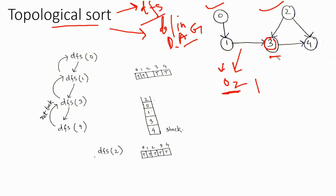Vertex 3 is dependent on job 1 and job 2. Since job 1 and job 2 are already processed, we can now process job 3. Job 4 is dependent on 3 and 2, and since 3 and 2 are already processed, we can process job 4. So basically, independent jobs are processed first compared to dependent jobs. For a graph, there can be multiple topological sorts.